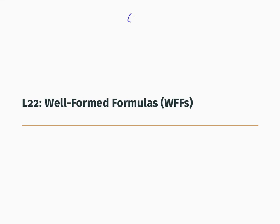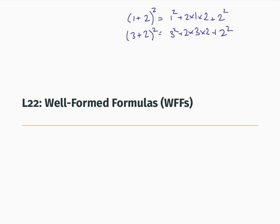One of the most useful things in high school algebra is that instead of taking an expression like this and working it out — for example, 1 squared plus 2 times 1 times 2 plus 2 squared, then doing 3 plus 2 squared, and so on — you can introduce a variable x and prove that (x+2)² equals x² + 4x + 4 no matter what value x takes. This is really efficient because you can do the calculation once and then substitute in whatever value x has.